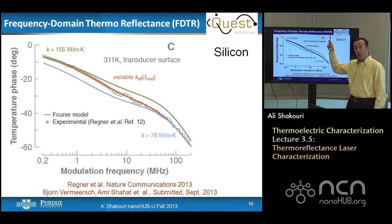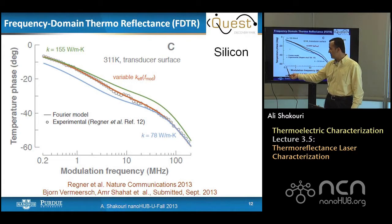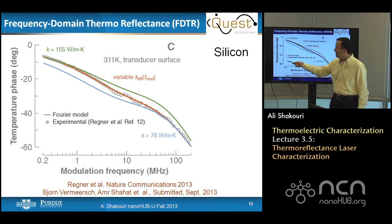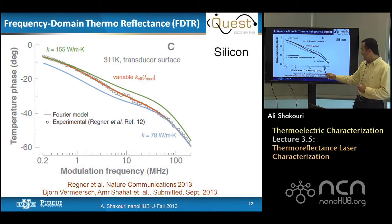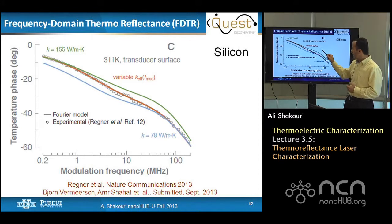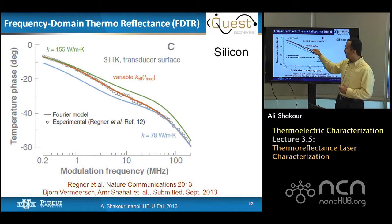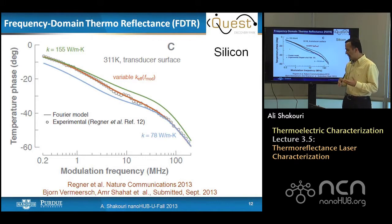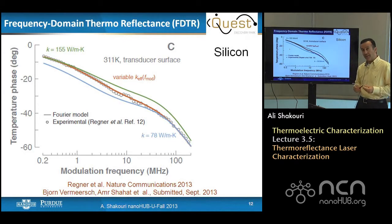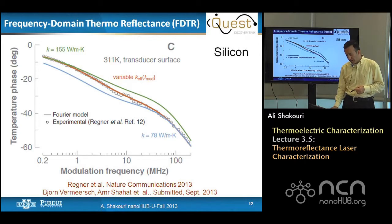Frequency-domain thermoreflectance uses a single sinusoidal source of heat changing in frequency from 0.2 to 100 megahertz, and they measure a phase delay — a typical thermal diffusivity measurement. For silicon at 311 Kelvin, at low modulation frequency they can fit the phase delay with a thermal conductivity of 155 W/m·K, which is what we expect. But when they go to 100 megahertz, the fitted result is 78 — almost a factor of two smaller. By varying the thermal conductivity versus modulation frequency, they can fit the whole curve. So this effect is not coming from pulse accumulation. There is a recent paper coming out soon by Bjorn Vermich and others addressing this.